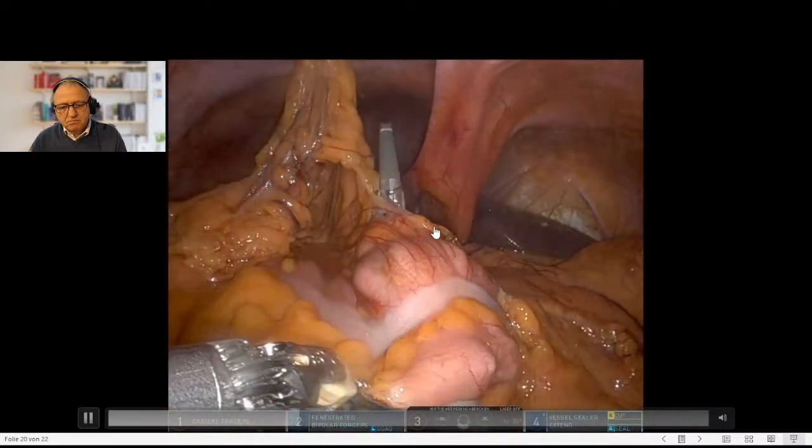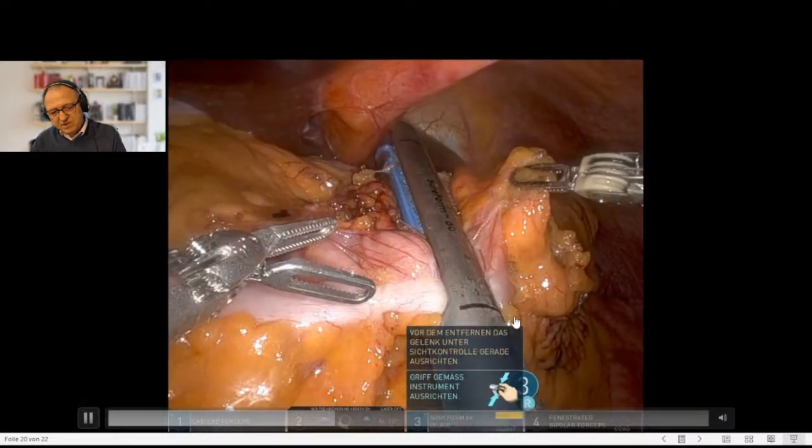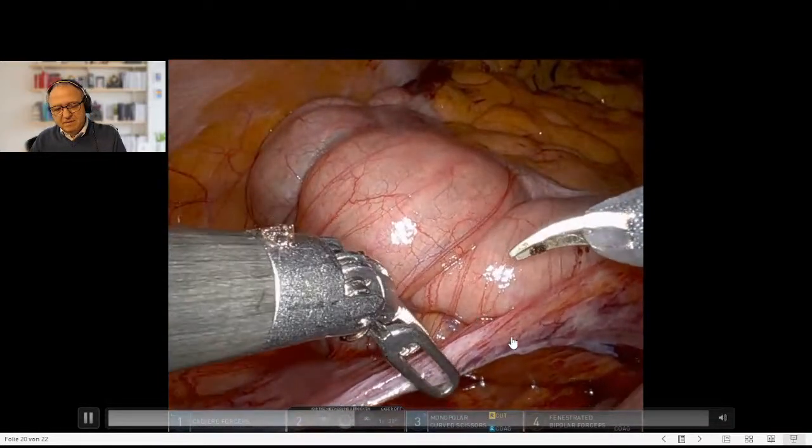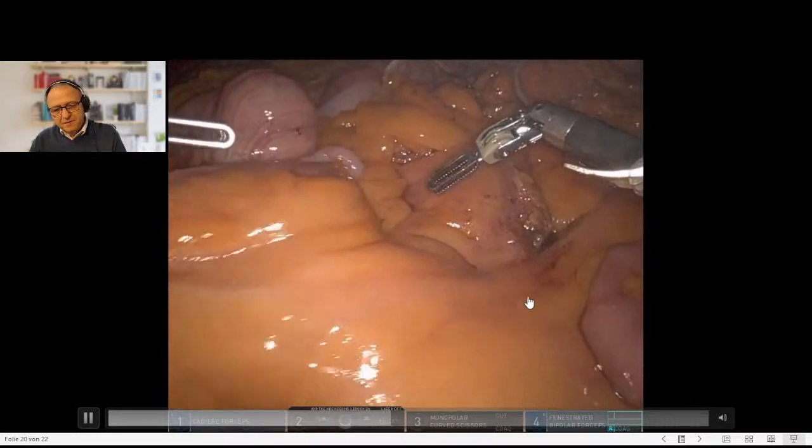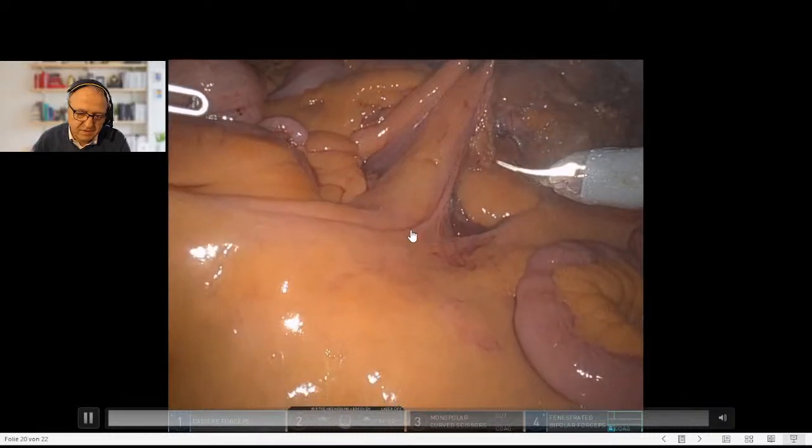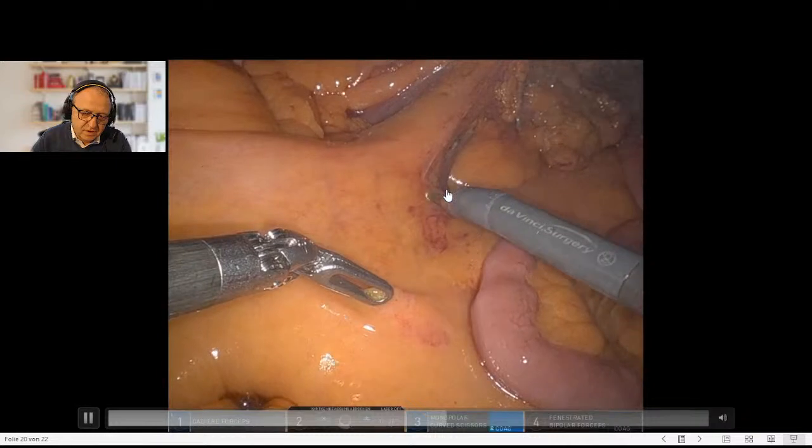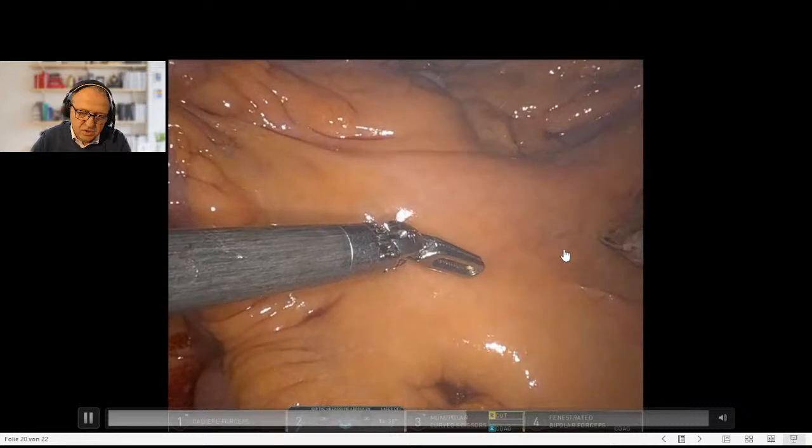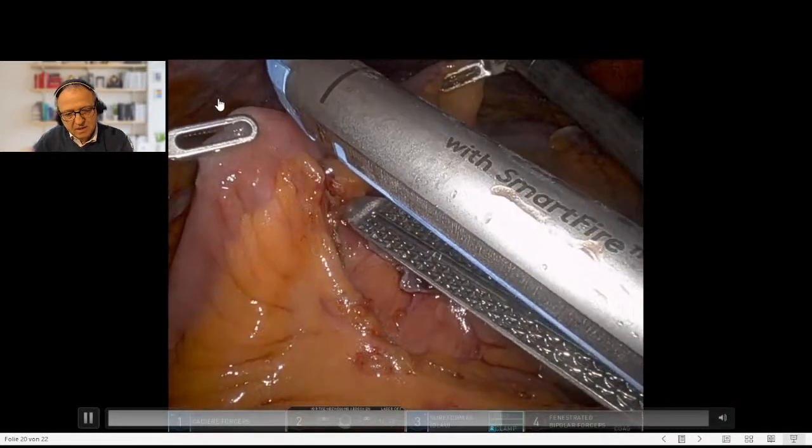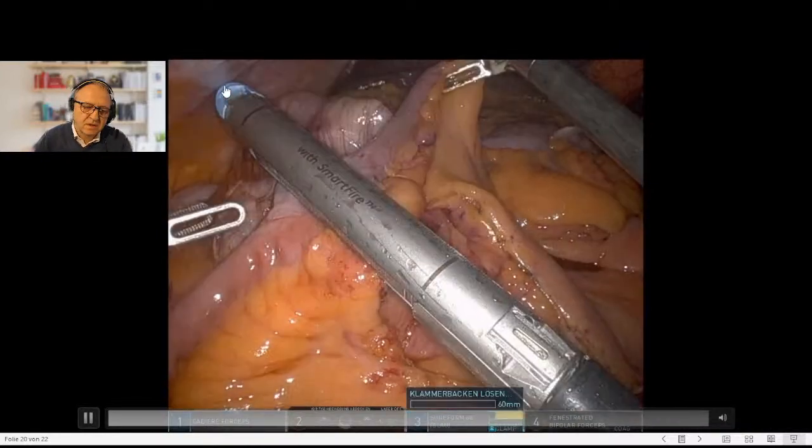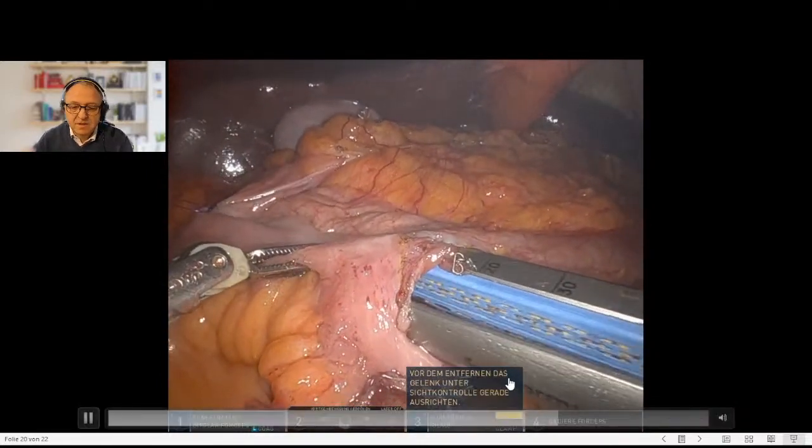Then we divide the mesocolon up to the transverse mesocolon and staple it with a robotic stapler. In this way usually there is no impairment of perfusion. Of course you can do an ICG test. It's very important to mark your way to the ileum because you very easily get too close to the cecum and impair the excision of the lymphatic drainage area there. Also staple the ileum.